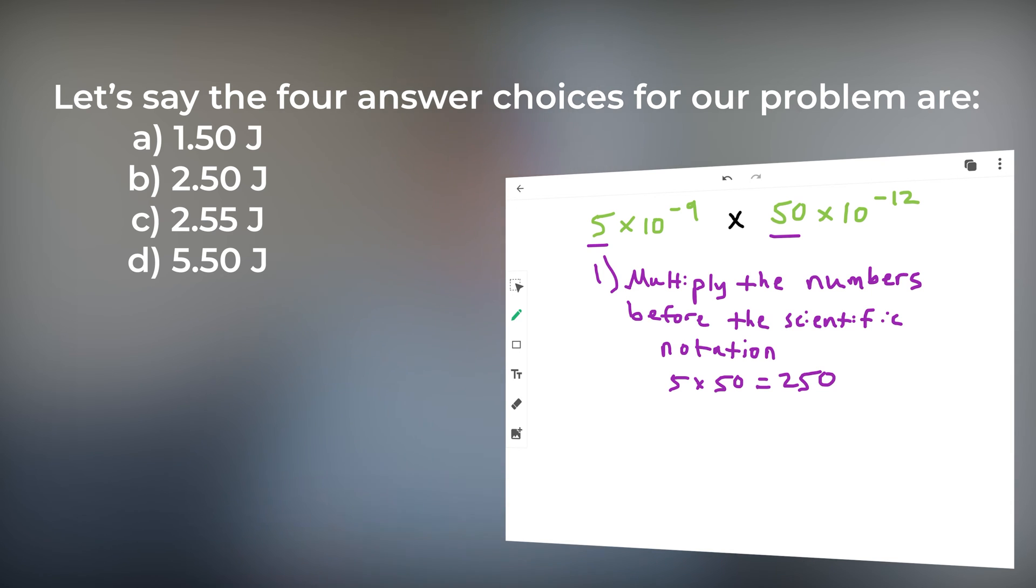It does not matter where we place the decimal. Any time we multiply 5 by 50, we'll get a number that looks similar to 250 but not 150, choice a, 255, choice c, or 550, choice d. Without even looking at the scientific notation, we were able to determine the correct answer.